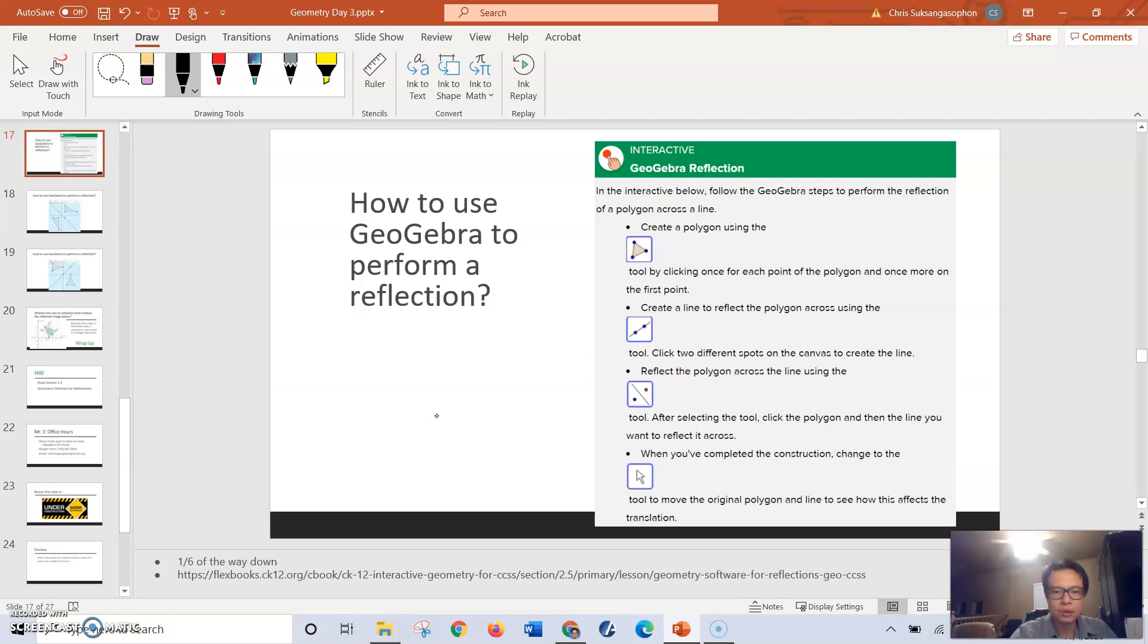Then you're going to click on this reflection tool here. Then click on your shape and then click on the line. And that will automatically produce the image on the other side of the line.